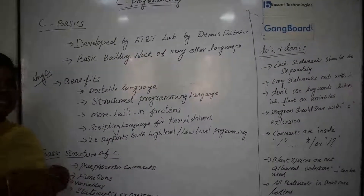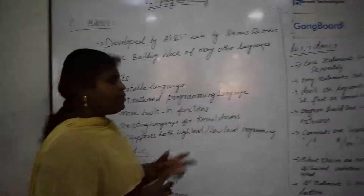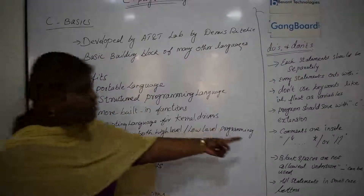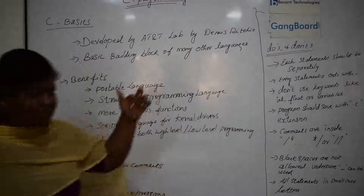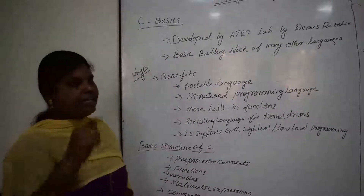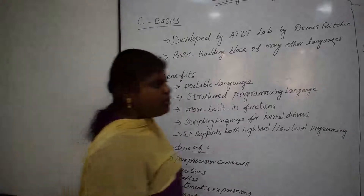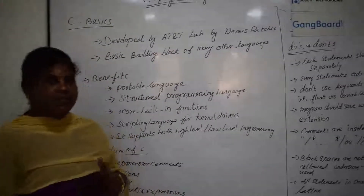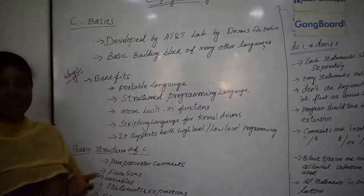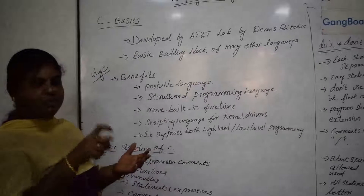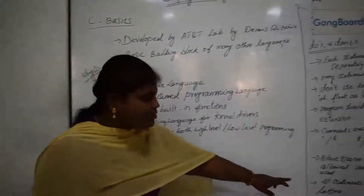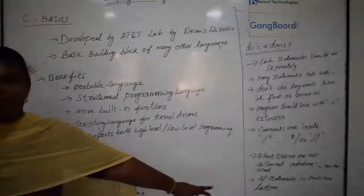For comments, use slash-star and end with star-slash for block comments, or double-slash for single-line comments. Use blank spaces and underscores when combining two words. All statements should be written in small case letters.